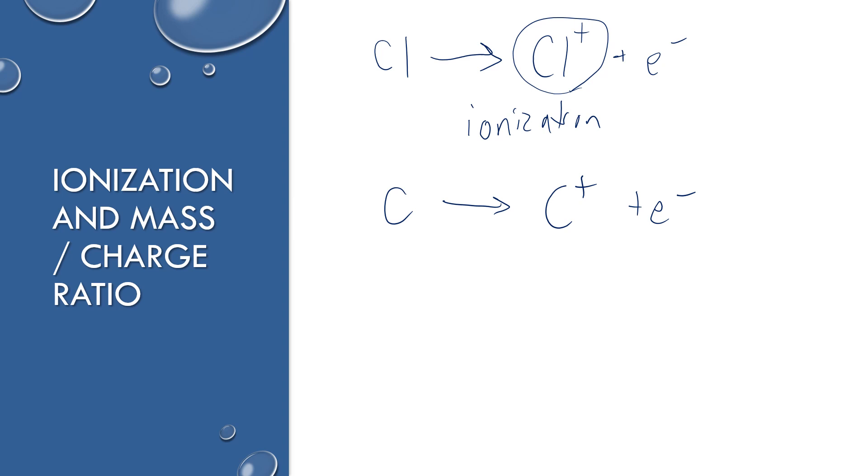A lot of times we will be looking at something called the mass to charge ratio and it will look like this: m over z. Because of the way that we process a lot of these elements, z will wind up being one, plus one, because a lot of those elements are going to have a plus one charge. So when you have m slash z, most of the time it's going to be equivalent to just the mass.